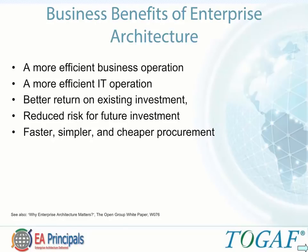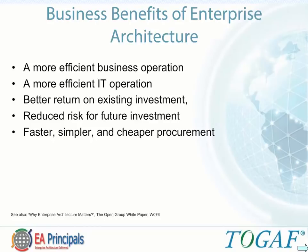Enterprise architecture can facilitate easier upgrade and exchange of system components, enable better return on investment and reduced risk for future investment, reduce complexity in business and IT environments, maximize return on investment in existing infrastructure, and enable the flexibility to make, buy, or outsource business and IT solutions. It can also reduce overall risk in new investments and their total cost of ownership. Enterprise architecture can facilitate faster, simpler, and cheaper procurement by simplifying buying decisions, enabling faster procurement processes, and enabling the ability to procure heterogeneous multi-vendor open systems.